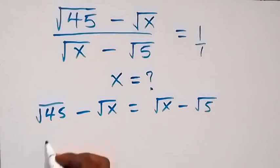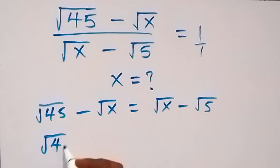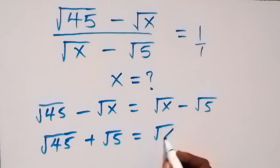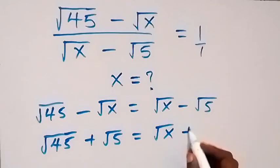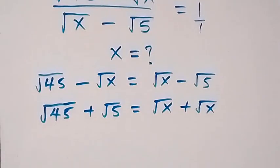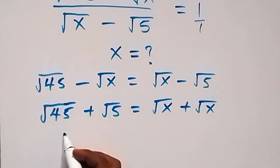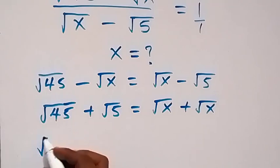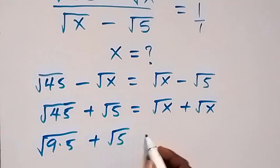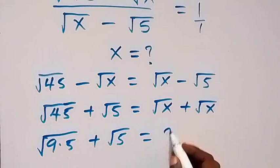Taking the x terms to one side, we have root 45 plus root 5 equals 2 root x. We can write root 45 as root 9 times 5, which is 3 root 5, and then 3 root 5 plus root 5 equals 2 root x.